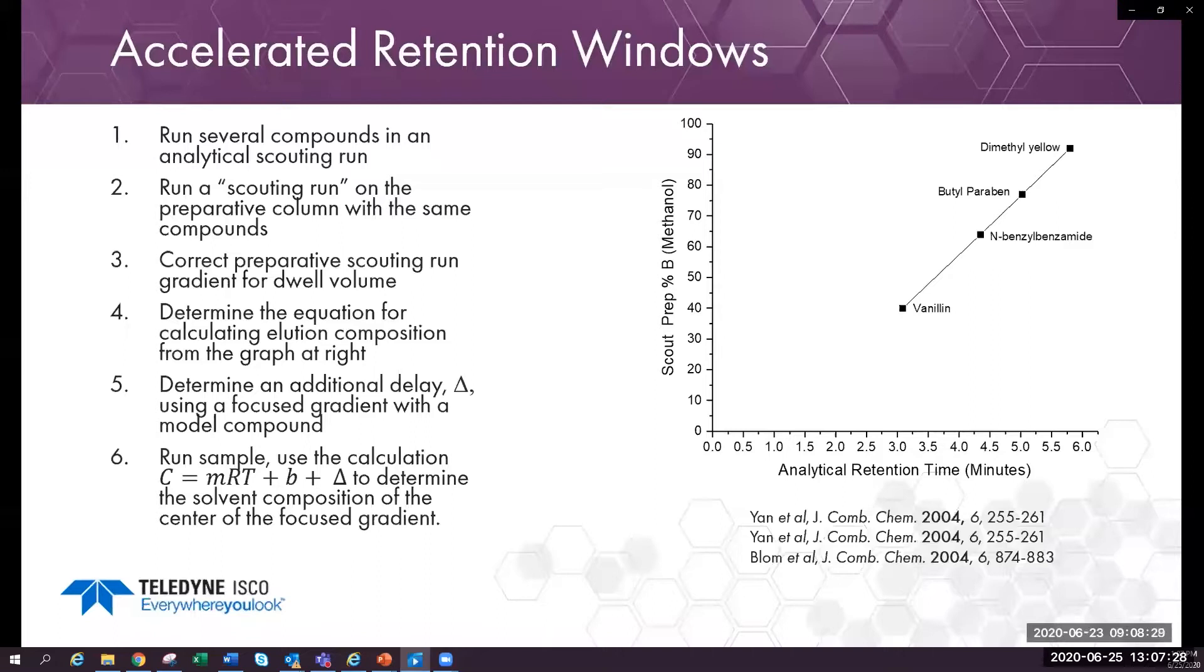M and B are the slope of the intercept of the line in the graph. RT is the retention time on the analytical run and the value delta is determined by trial and error. This varies by column and instrument and your desired retention time. A change in system requires a new calibration.